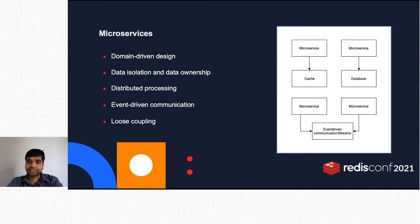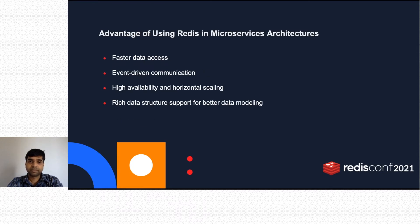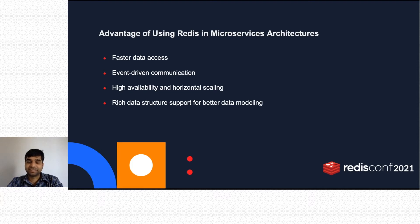Microservices often use cache, database, and streams to help with data processing. Redis helps to implement microservice architecture. Depending upon your business use case, Redis can be used for faster data access and event-driven communication. Additionally, Redis supports high availability and horizontal scaling. These are very beneficial when you need to scale microservices. Depending upon the type of data that a microservice handles, it can use an appropriate data structure within Redis.